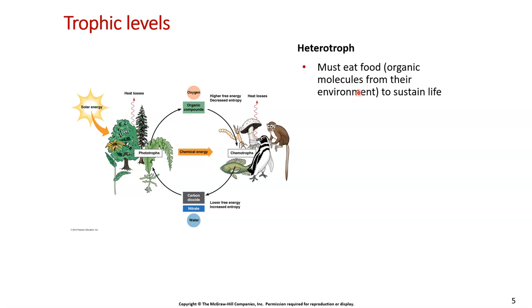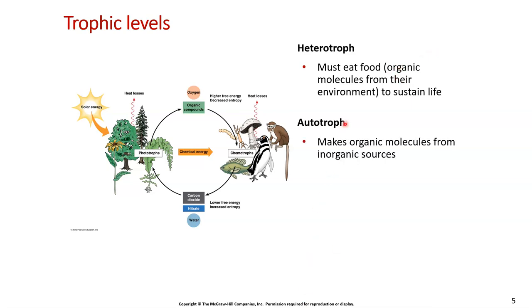The trophic level refers to the term heterotroph. A heterotroph must eat food or something organic to stay alive. 'Hetero' means different, so this means an organism that eats something different from itself — like a bird, a human, or a dog. All these different things must eat some type of organic food. The opposite of a heterotroph is an autotroph — 'auto' means the ability to do it itself, so an autotroph can make organic materials from inorganic sources.